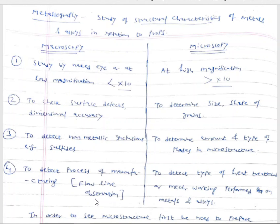To detect the process of manufacturing, macroscopic examination may be used. Suppose you have been given three components of the same size, shape, and material — one manufactured by casting, second by rolling, and third by forging — and you have been asked to identify which process produced which product. It is possible by conducting flowline observation type of macroscopic examination to sort out whether the manufacturing process is casting, rolling, or forging.